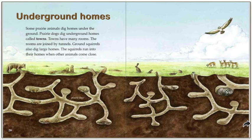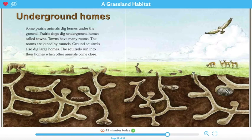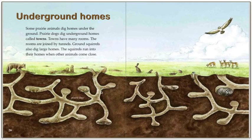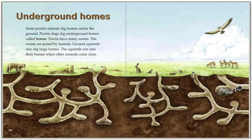Underground homes. Some prairie animals dig homes under the ground. Prairie dogs dig underground homes called towns. Towns have mini rooms joined by tunnels. Ground squirrels also dig large homes and run into their homes whenever other animals come close. So towns are the homes of prairie dogs — they are underground and have little tunnels that lead into rooms, just their version of a home.